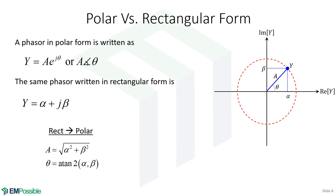To go from rectangular form to polar form — where rectangular means we have a real and an imaginary part — calculating the magnitude is easy: that's just the Pythagorean theorem, the square root of alpha-squared plus beta-squared, or the square root of the real part squared plus the imaginary part squared. The angle is more difficult. We might want to use arctan, but the arctangent has problems in that it's limited in the angles it calculates, so we really have to use the two-argument arctangent.